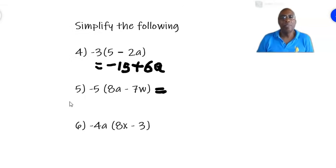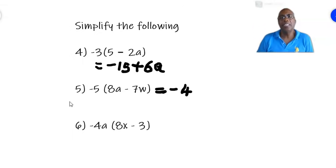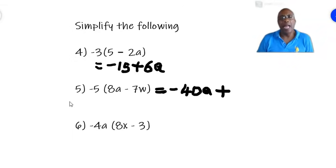Number 5: negative 5 times (8a minus 7w). 5 times 8 is 40, and a minus times a plus is a minus, so we get negative 40a. And minus 5 times minus 7w — a negative times a negative is a positive. And 5 times 7w is 35w. So the answer is negative 40a plus 35w.